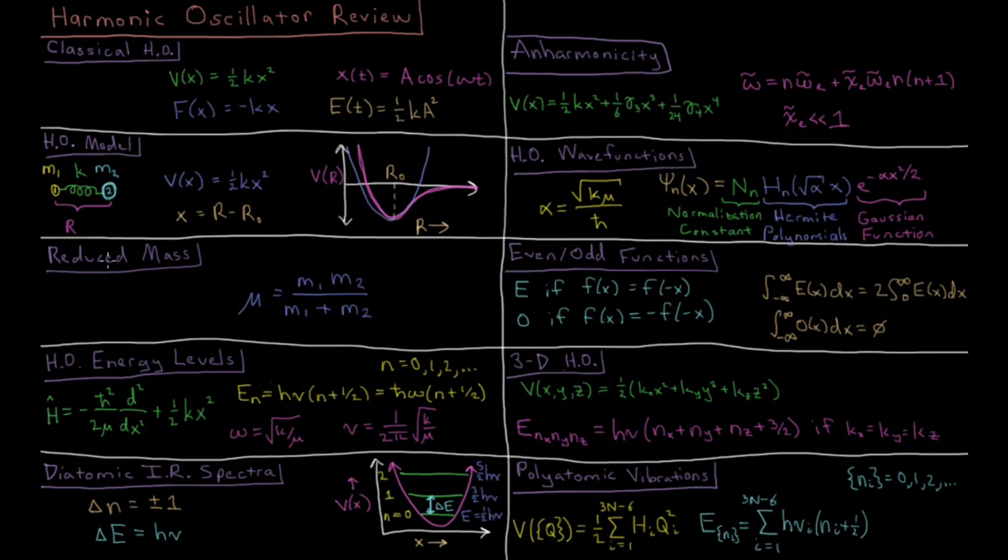The mass that we're going to need to use for the system is not the mass of either particle, but the reduced mass of the system, which is the product of the two masses divided by their sum. That has different forms depending on whether mass 2 or mass 1 is much larger than the other, or whether they're the same.